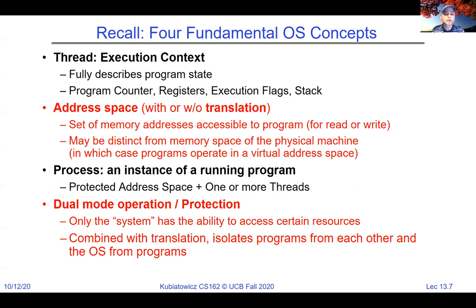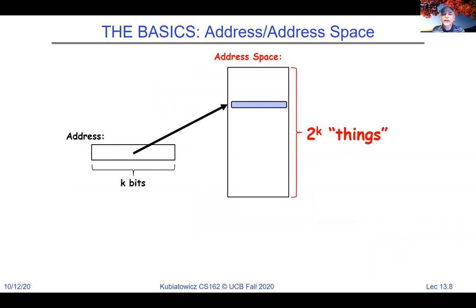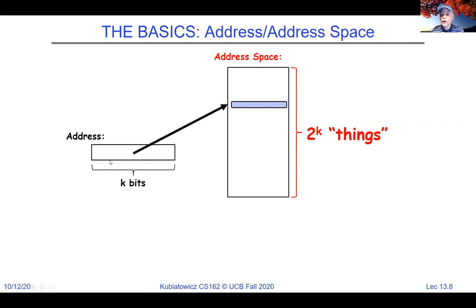Address space and dual mode operation are concepts we haven't revisited since the beginning of class — it's time to bring them back. The address space is the set of addresses accessible to a given thread or process. If the CPU address is k bits, there are 2^k things we can access. With 8 bits, there are 256 bytes. Today, everything is multiples of eight — powers of two.